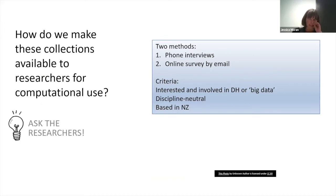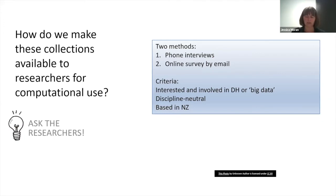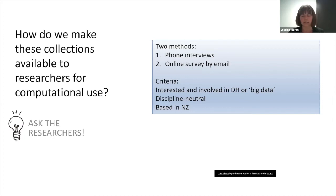We've been grappling with how to make these collections accessible to researchers for computational access, and it's not a straightforward question. We want to provide good service and make these as easy to use as possible, but we also need to balance the ethical and legal issues around making the content available. To begin to understand what researchers actually wanted from our big web and social media data, we conducted some research led by Lana Osabag from our preservation research and consultancy team. We did surveys and interviews with a select list of faculty involved in DH, as well as staff including librarians and IT specialists.